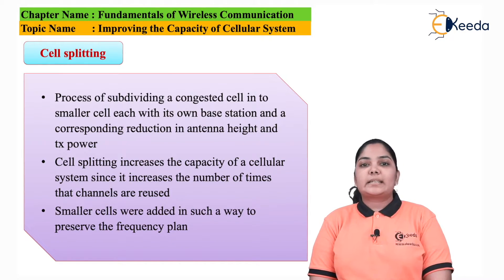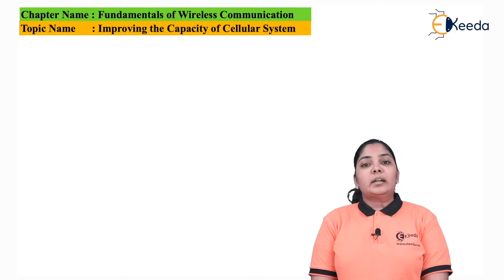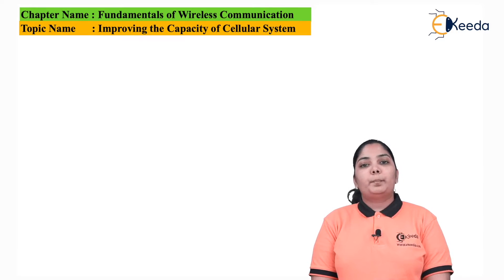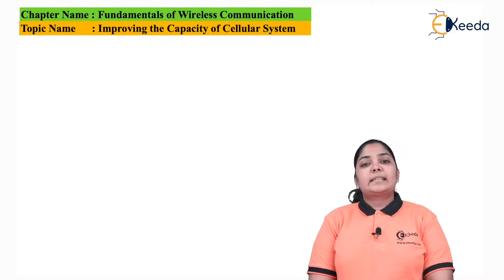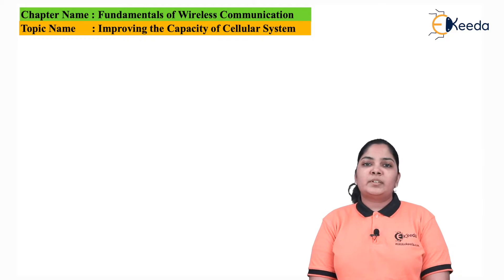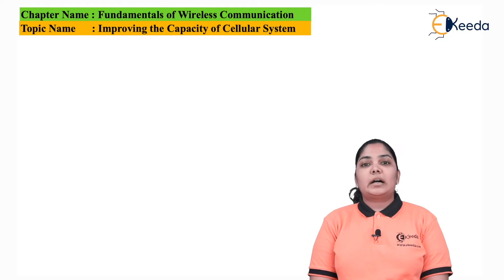We are only resizing the cell and the frequency reuse plan remains as it is. In this diagram, we can see larger cells covering the entire geographical area. The base stations are placed at the edge of the cell, giving us three base stations per cell, named A, B, C, D, and so on. The center of the cell has more users and insufficient channels, so we resize the system by placing new base stations at half the distance of the initial base stations.